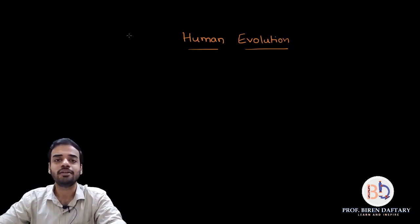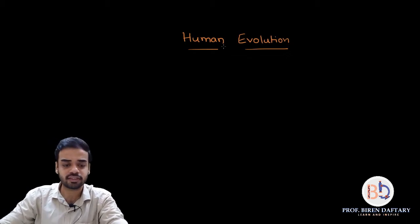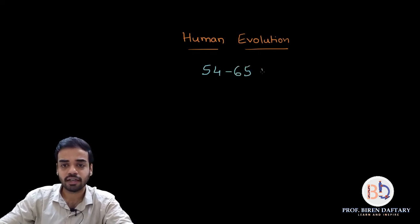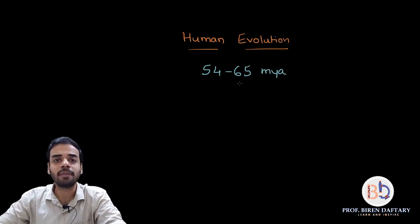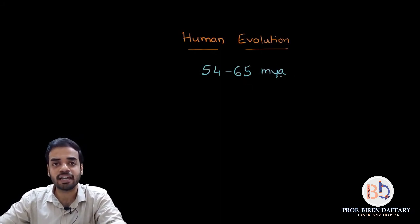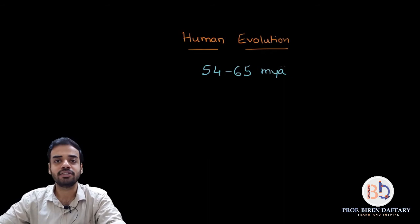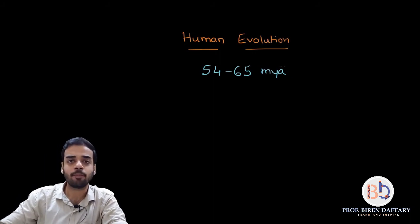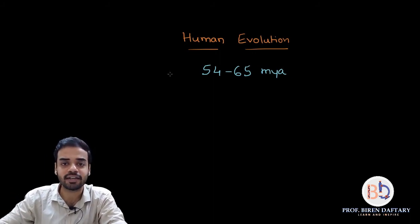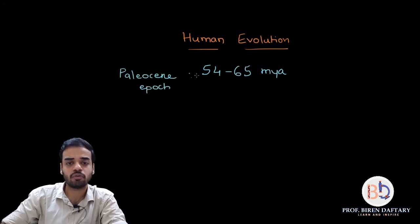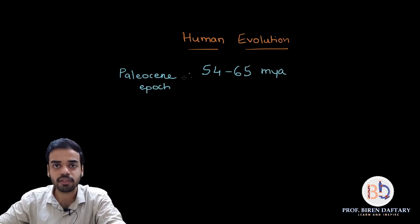Human evolution began approximately 54 to 65 million years ago. Million years ago is written as MYA — please remember that abbreviation. That is when the evolution began, and the time frame where that evolution began is called the Paleocene epoch.